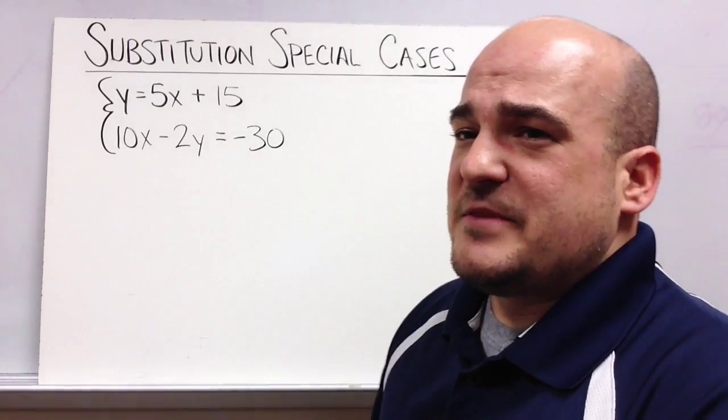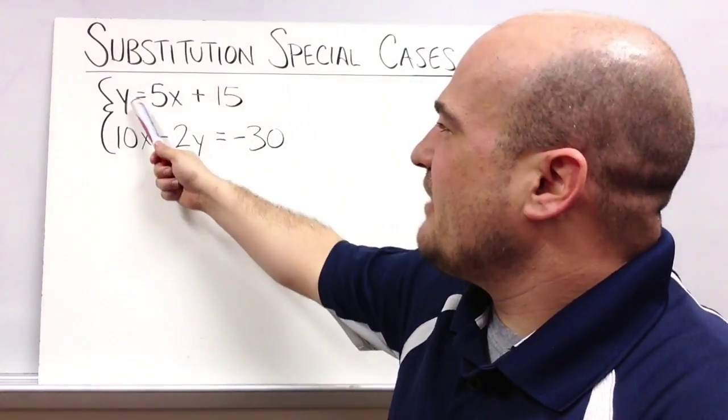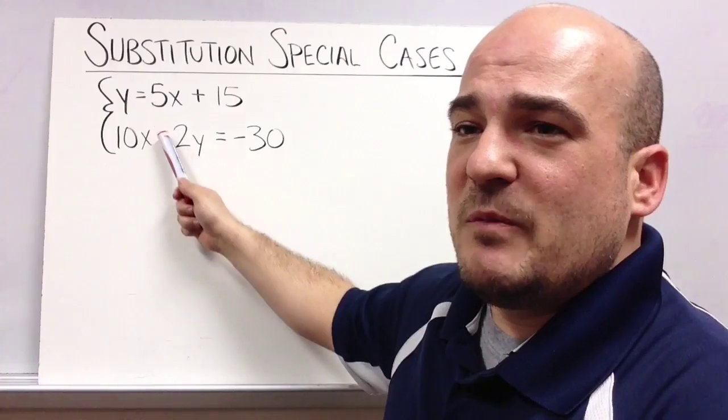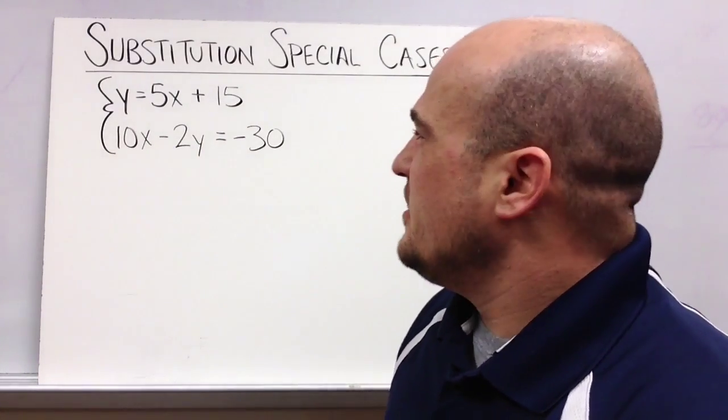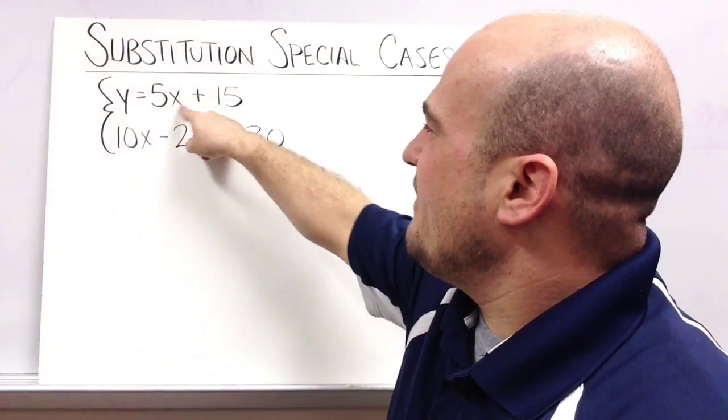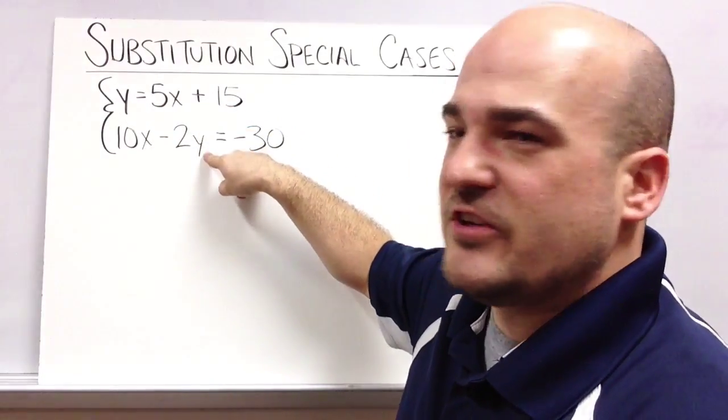Alright. So again, I have a system of equations. They're set up perfectly. I've got one of them in slope-intercept form and one of them in standard form, so that's a great opportunity to use substitution. So I'm going to plug in this value, 5x plus 15, wherever there's a y.